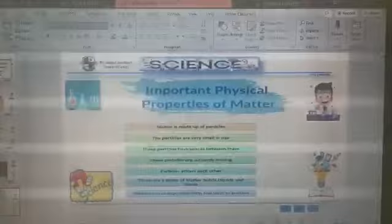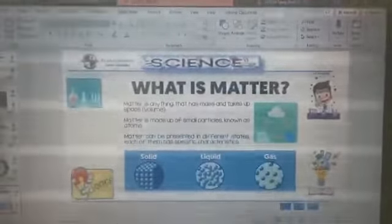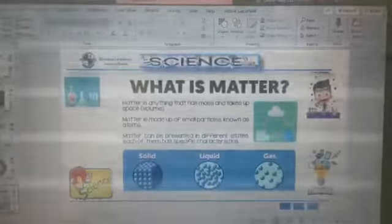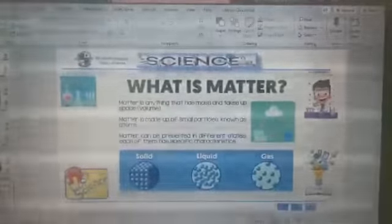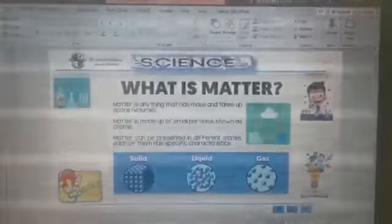Matter is made up of small particles, and these small particles are known as atoms. Matter can be presented in different states. What are these states? Let's talk about these states.